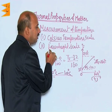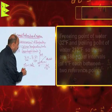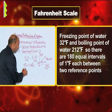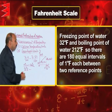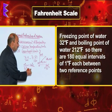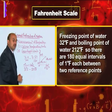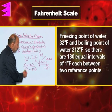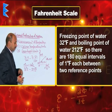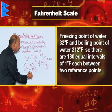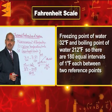Another temperature scale is the Fahrenheit scale. In this one, the freezing point of water is taken as 32 degrees Fahrenheit and the boiling point of water is taken as 212 degrees Fahrenheit. Between 32 and 212, one hundred and eighty divisions are made, and each division is equal to 1 degree Fahrenheit.